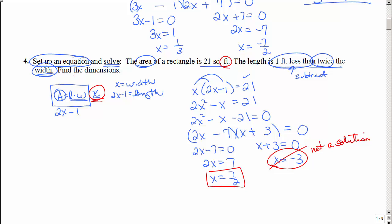So let's go back. It says, find the dimensions. It doesn't just say find x. So I know x, which is my width is seven halves, but I've got to do this. How do I do that? I'm going to substitute in for x what x equals.